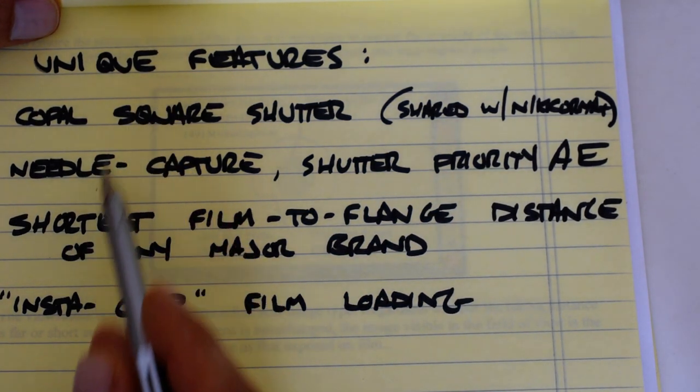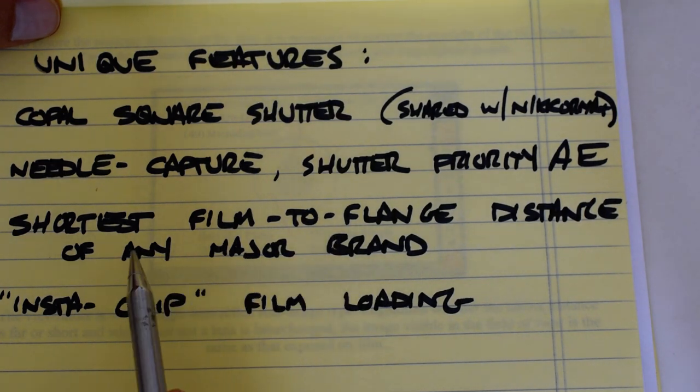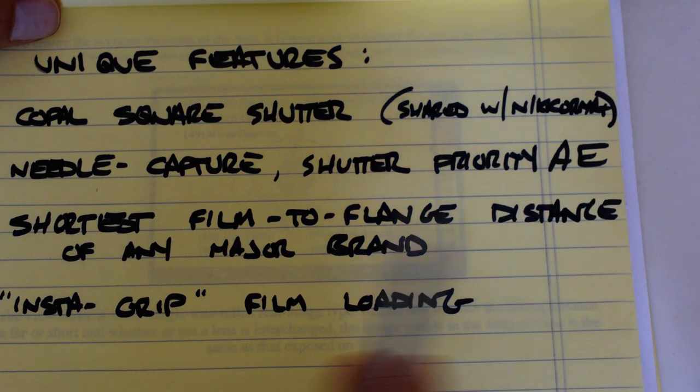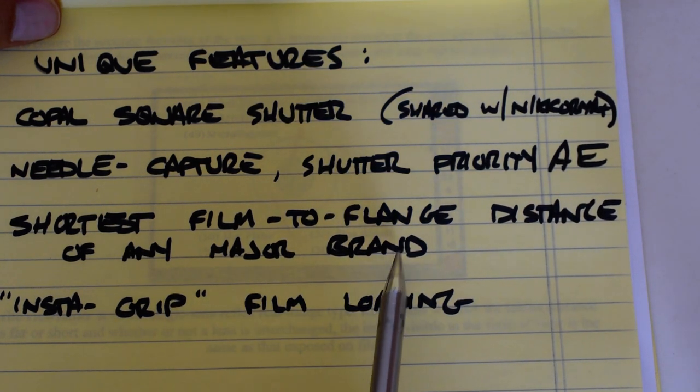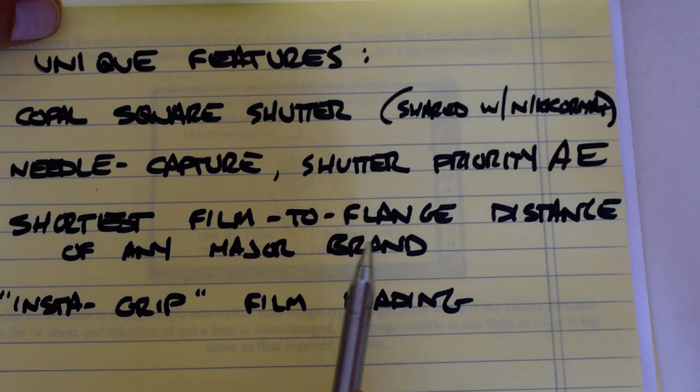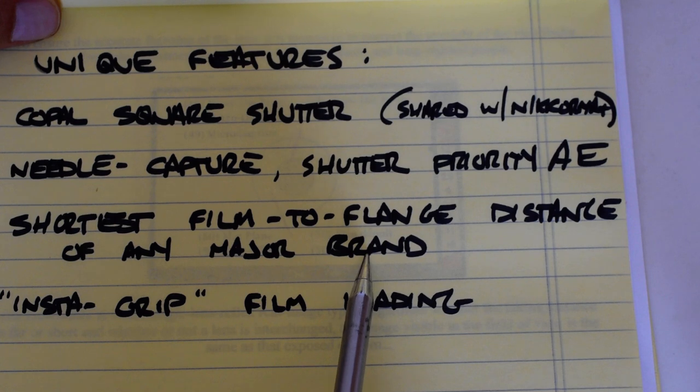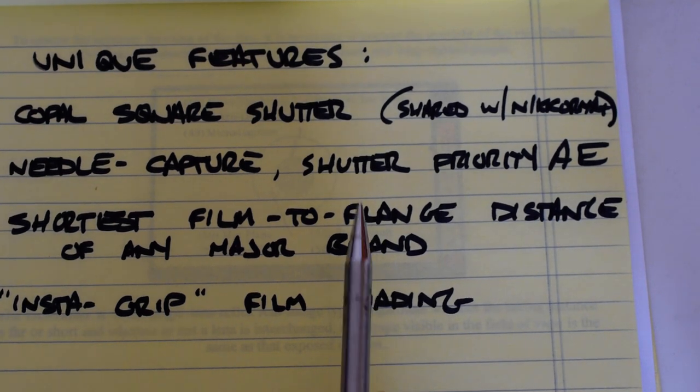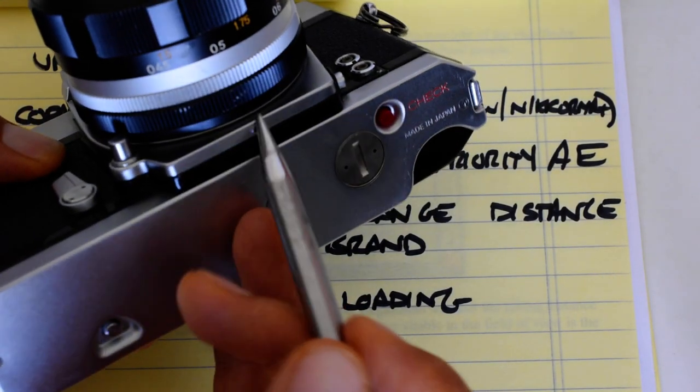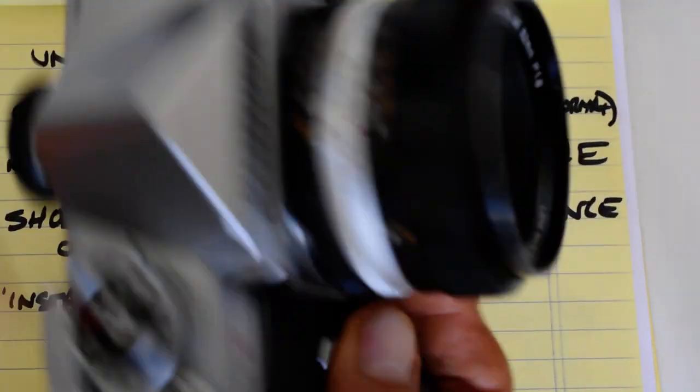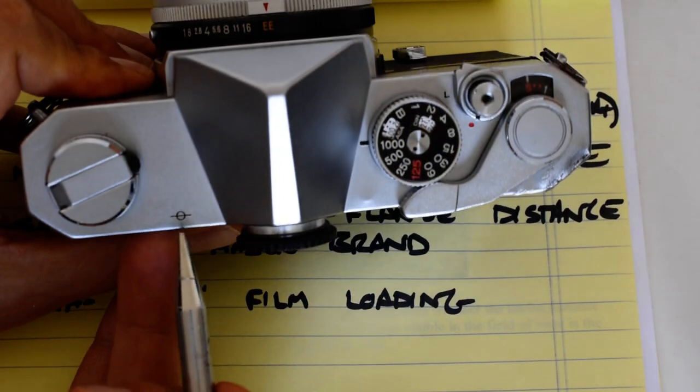It's a fascinating little setup, entirely mechanical, no electronics involved. Also, the Autoreflex series and the Konica SLRs in general feature the shortest film-to-flange distance of any major brand. That is significant because there are adapters available. They're not easy to find but they're out there. There are adapters available which will let you mount just about any lens onto the Autoreflex camera.